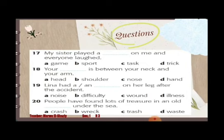Nineteen: Lena had a/an ___ on her leg after the accident. A: noise, B: difficulty, C: wound, D: illness. Twenty: People have found lots of treasures in an old ___ under the sea. A: crash, B: rack, C: trash, D: waste.